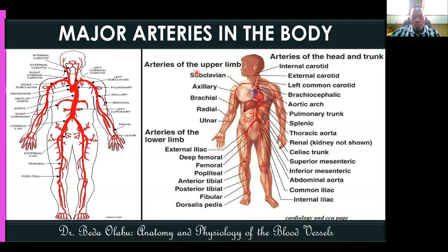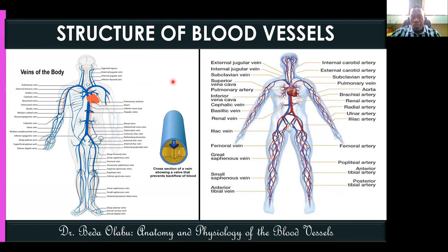It is clinically important to know where arterial pulsations are felt. Deep veins generally follow arteries and share the same names — for example, femoral artery and femoral vein, subclavian artery and subclavian vein. Exceptions include the aorta accompanied by the vena cava, and the common carotids accompanied by the jugular veins, not a 'common carotid vein.'